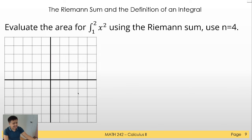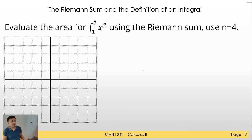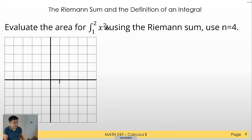Let's try doing this problem and calculating the Riemann sum. Evaluate the area using the Riemann sum with n equals 4. We have a given function x squared dx, with the limit a equals 1 and b equals 2. So we have this a and this b. How do we graph this function? Since the points of interest are 1 and 2, we substitute: when x equals 1, x squared equals 1; when x equals 2, x squared equals 4.